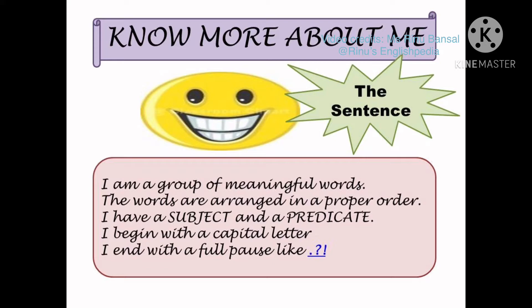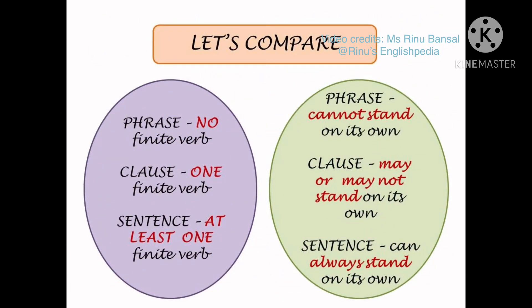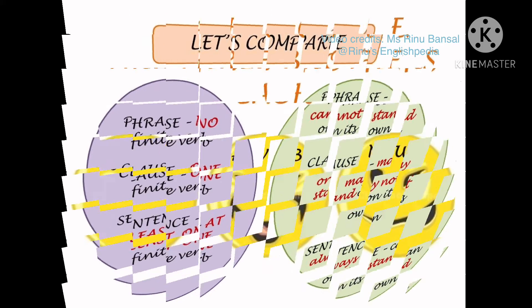A sentence is a group of meaningful words arranged in a proper order. It has a subject and a predicate, begins with a capital letter, and ends with a full pause — a full stop, question mark, or exclamation mark. Comparing all three: a phrase has no finite verb and cannot stand on its own; a clause has one finite verb and may or may not stand on its own; a sentence has at least one finite verb and can always stand on its own.